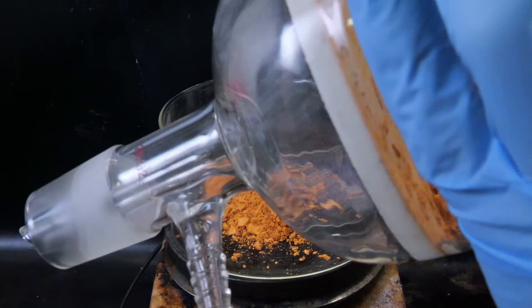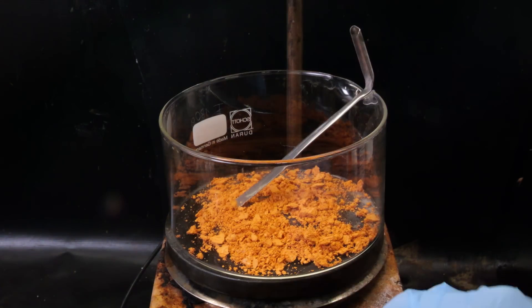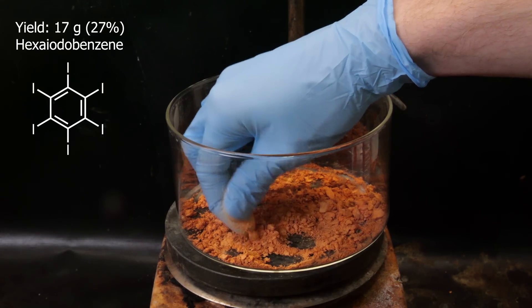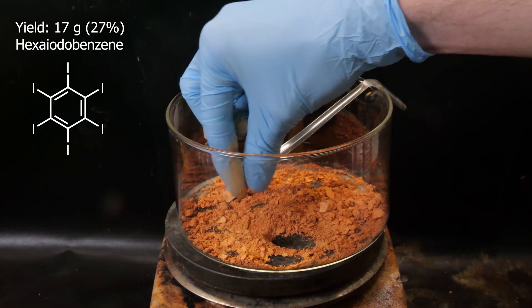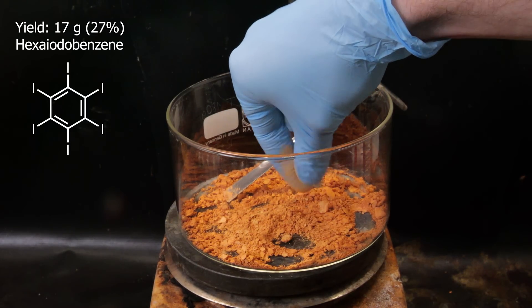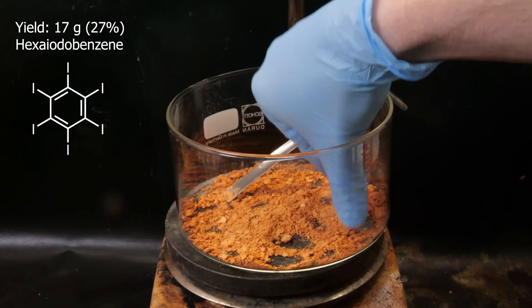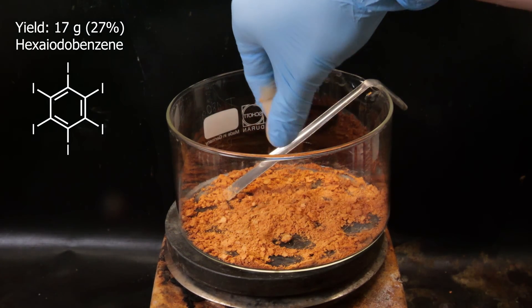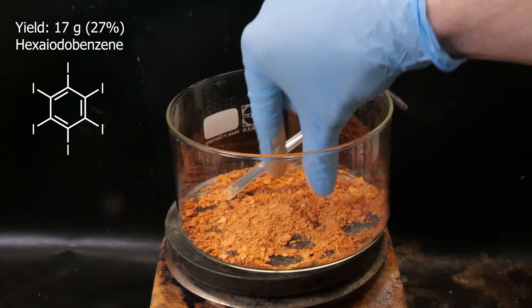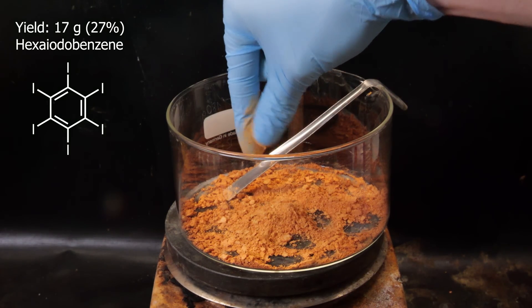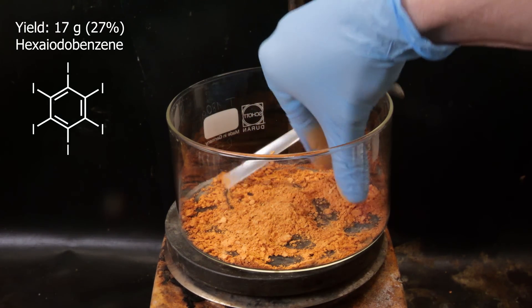Afterward, I move it to a dish that I heat to 100C and allow it to dry, giving about 17 grams of hexaiodobenzene. However, I want to clean it up even more to be sure it's pure. Since hexaiodobenzene is pretty much unreactive, especially towards oxidizers, it would be unaffected by piranha solution.